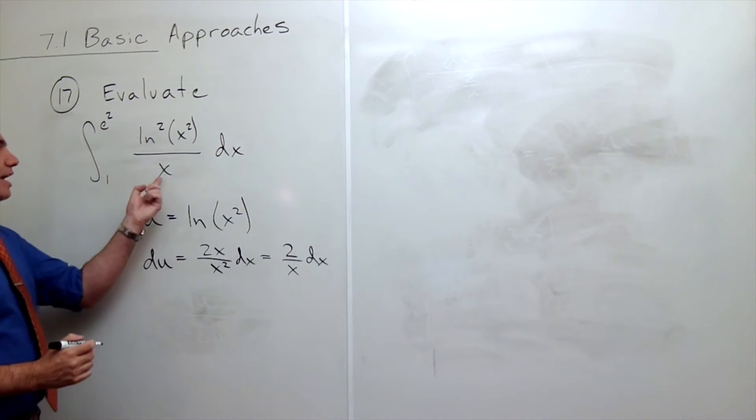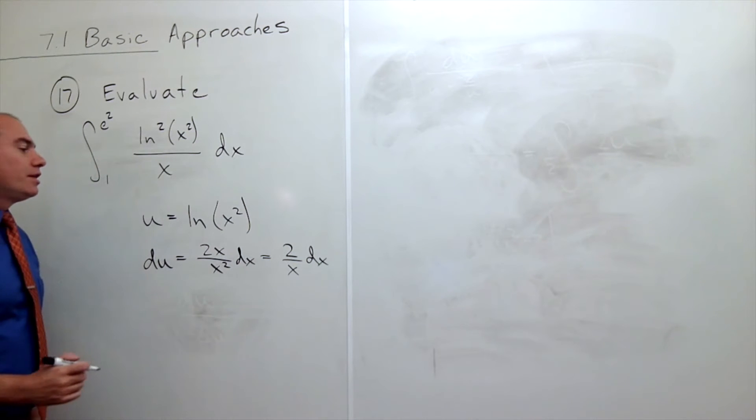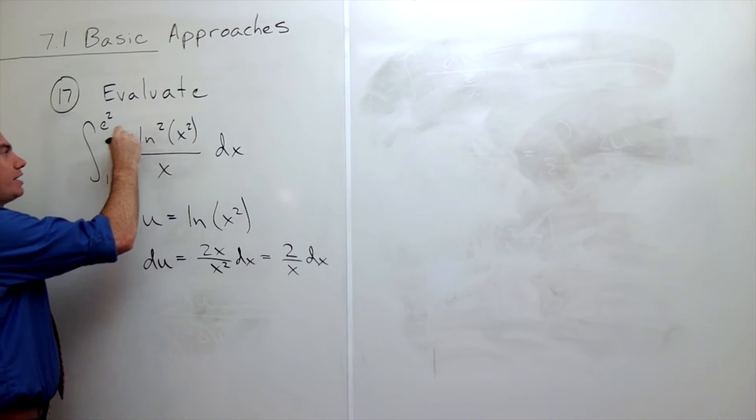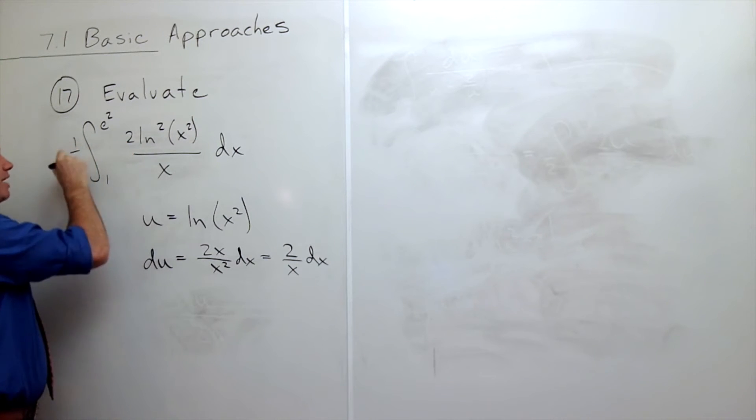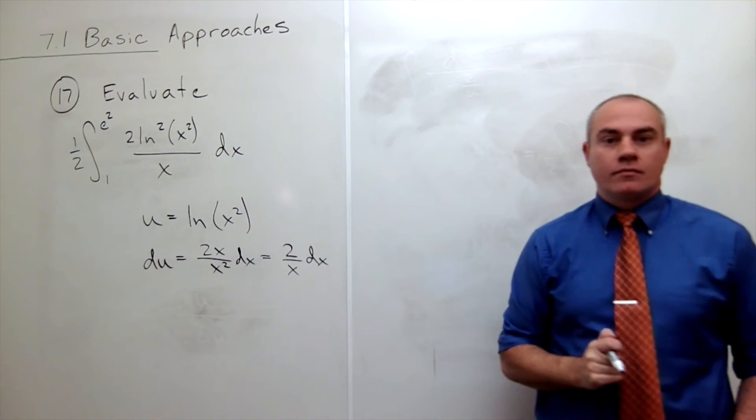And I see that I have an x on the bottom and a dx, but I don't have a 2. So if I want a 2 in here, I'm just going to go ahead and write in a 2, which means I'm going to have a 1 half outside of the integral side.